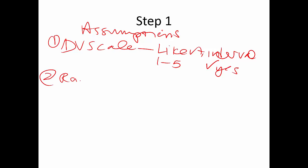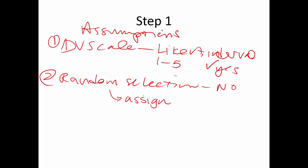Second assumption: is there random selection? Probably not — it's likely a convenience sample, so no. But could we randomly assign? In dependent T, this is not random assignment to groups like in independent T; rather, can we flip the order of the questions? That's called counterbalancing — I can randomly assign participants to a counterbalanced order.